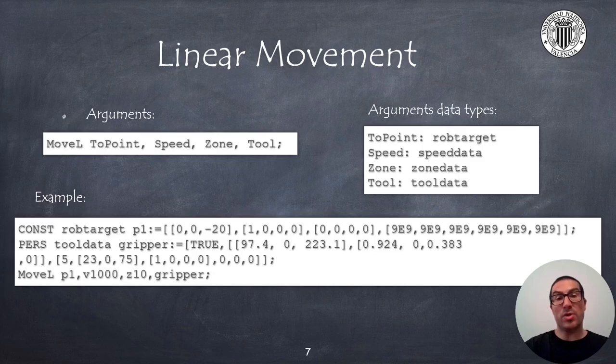The MoveL instruction has exactly the same arguments as the MoveJ instruction. That is, it allows to move the robot to a given target, but with a coordinated linear movement. Again, we will need to indicate the speed, the zone and the tool data that will affect the overall movement.